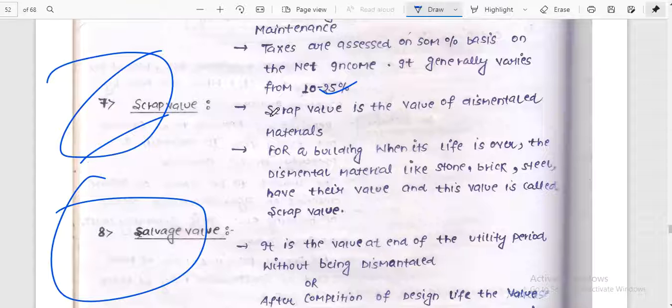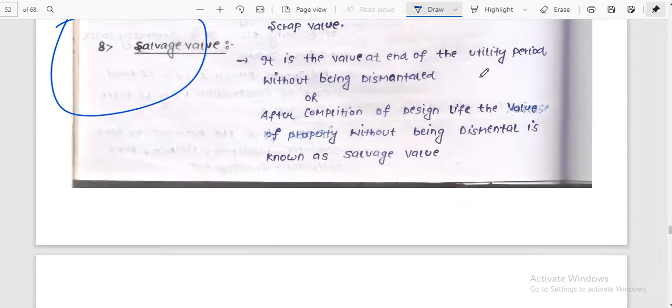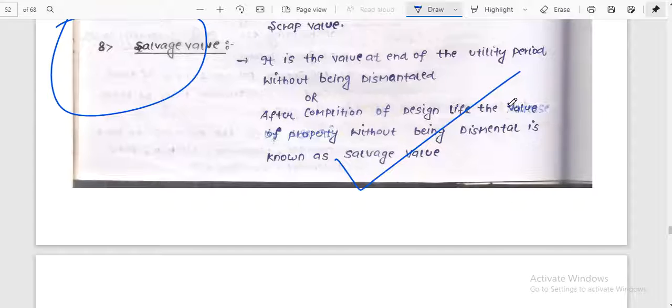Scrap or salvage value. This term is very important. Scrap value is the value of dismantled material. For a building, when its life is over, the dismantled material like stone, brick still have their values and this value is called scrap value. Salvage value is the value at the end of the utility period without being dismantled.